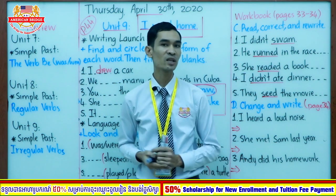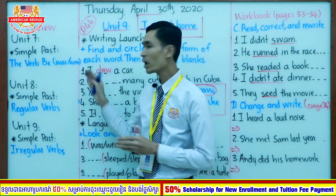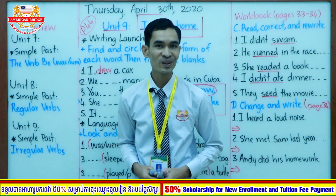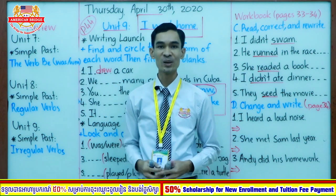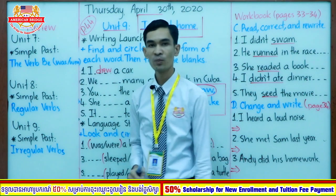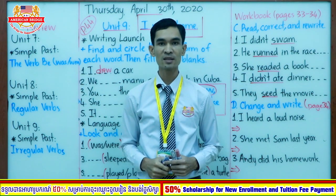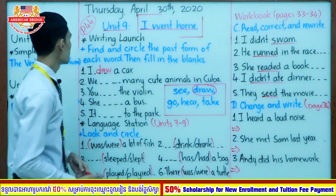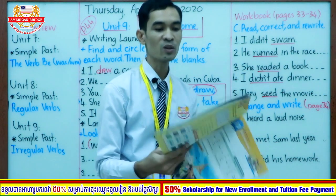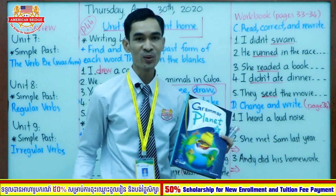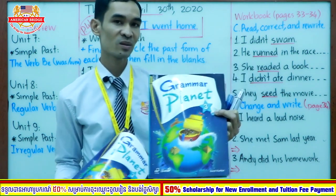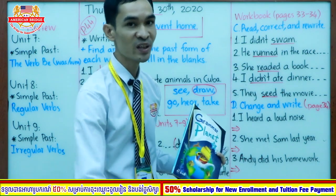'There was' is used with a singular noun, or sometimes with a non-count noun. 'There were' is used with a plural noun — meaning a noun referring to two or more things. Now that's the end of our review part. Are you ready? Please have your textbook and your workbook with you. Today we will practice with all books — Grammar Planet textbook and Grammar Planet workbook. Also have your notebook and pen ready.